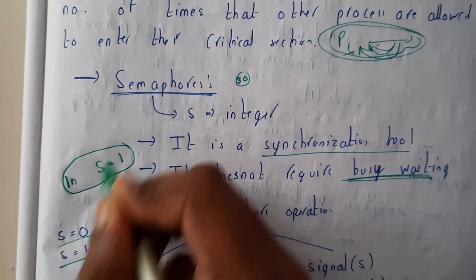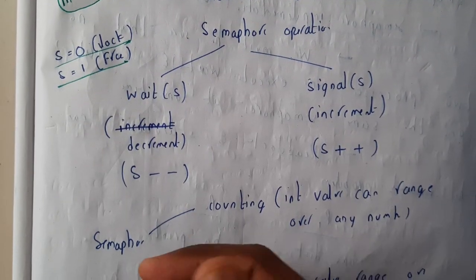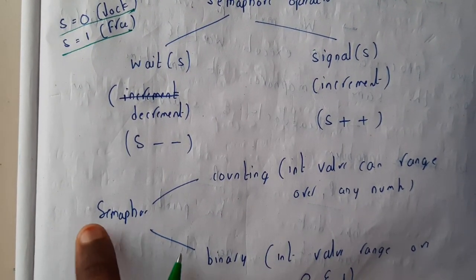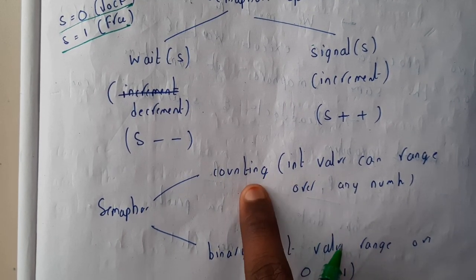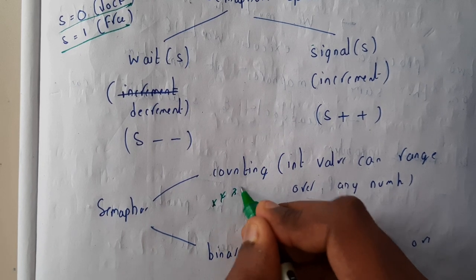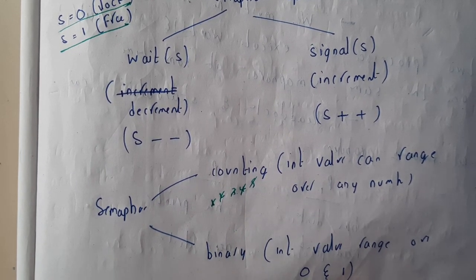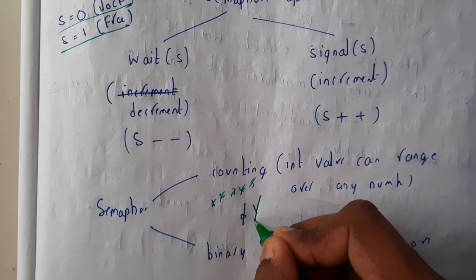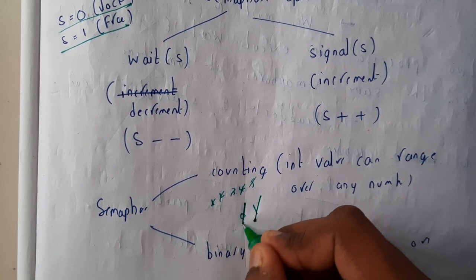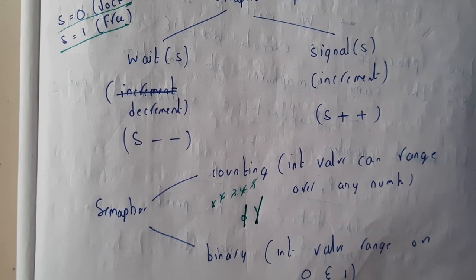Initially it will be open, and after that it will be locked and open according to the requirement. Semaphore can be counting or binary. Counting will be incremented one, two, three, four, five like that, whereas binary is between zero and one. Zero means lock and one means free.